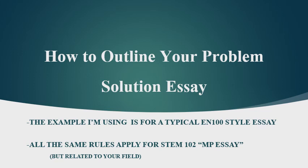Throughout this outline, I'm going to lean on one particular example from an essay from an EN 100 class about two or three years ago. It was the personal problem solution essay, and it was a clear-cut A — an obvious A paper that had all the points needed, but it was also pretty easy to understand. So as I use that personal example, don't forget if you're in the STEM class working on the modest proposal essay, all the exact same rules apply.